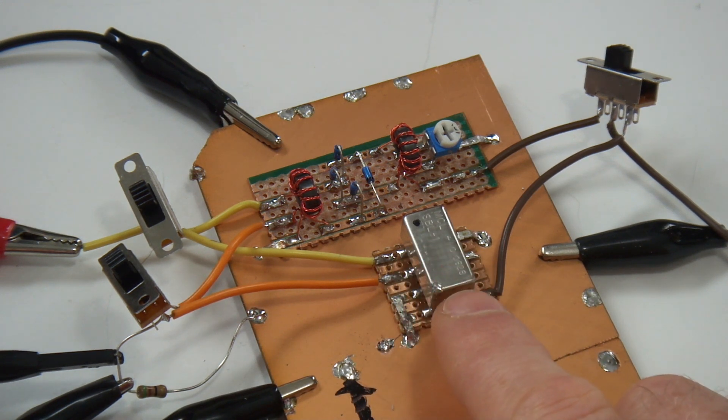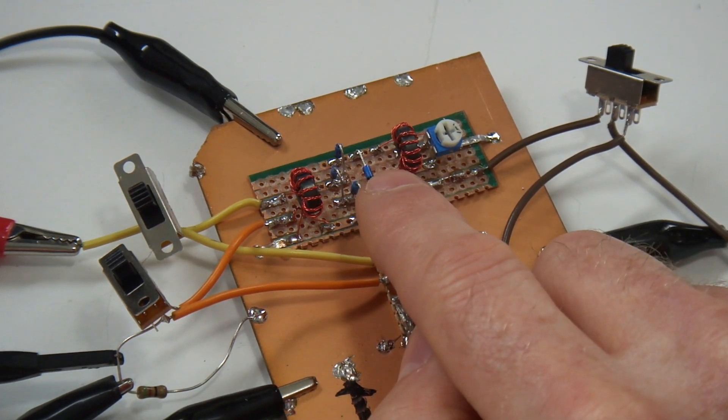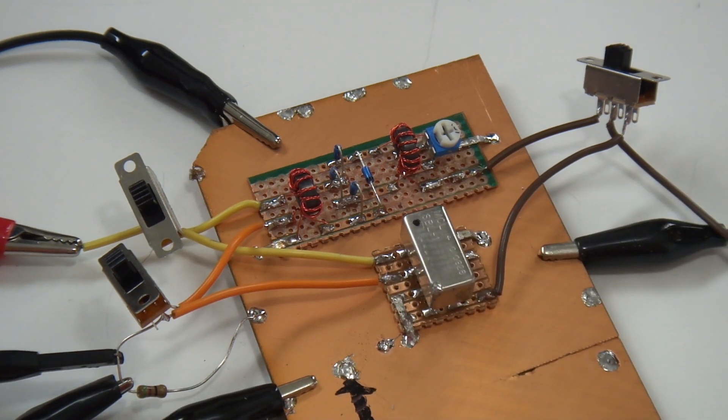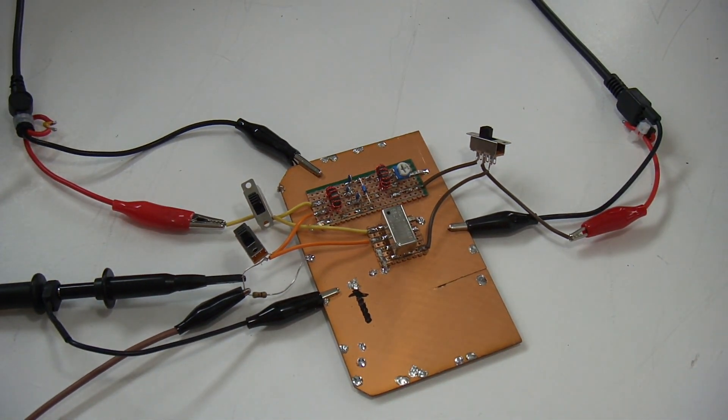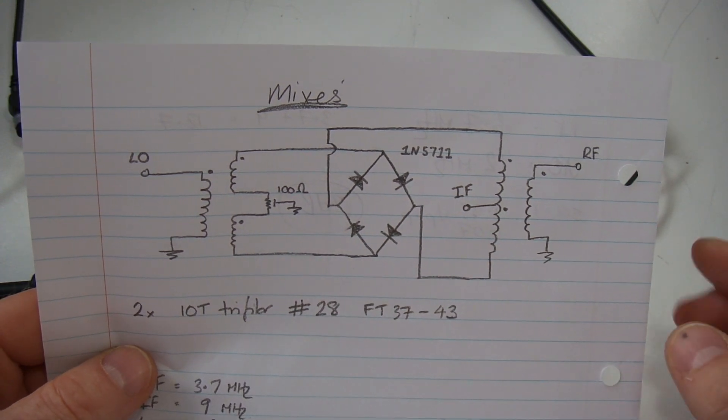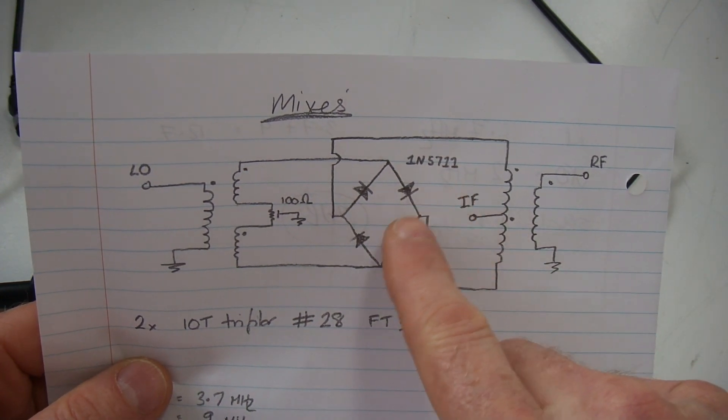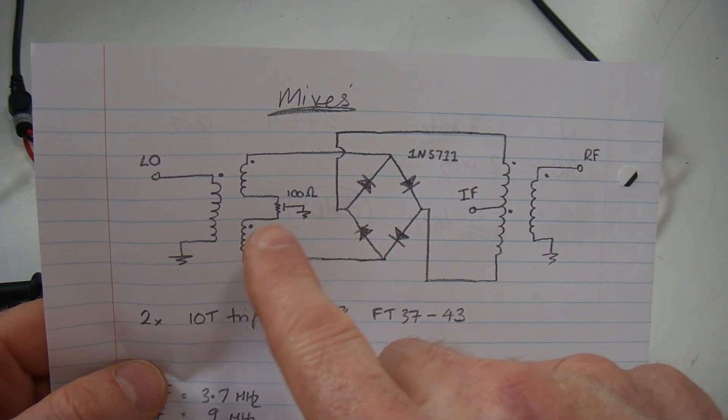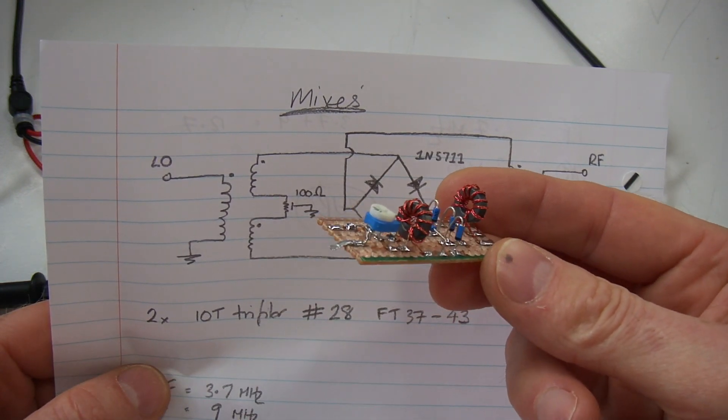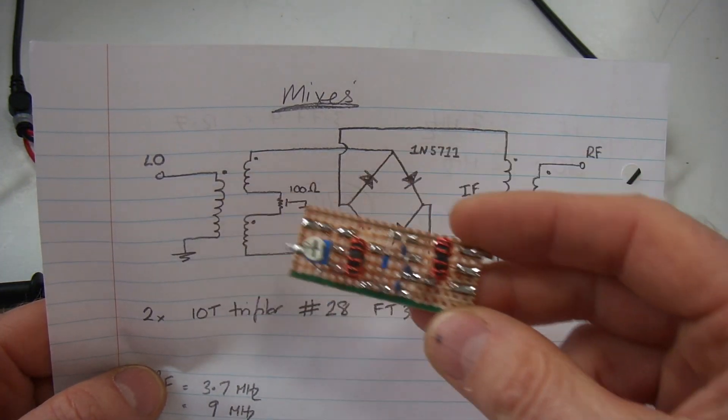You'll recall at the very beginning I said I wasn't going to use some of these exotic parts, for example the SBL1 here, but instead try and homebrew some mixers using more readily available parts. What I've elected to do for this circuit is the standard double balanced mixer setup, a diode ring using Schottky diodes - 1N5711s - and a couple of FT37-43 cores with 10 turns trifilar of number 28 wire configured as you can see here with the dots for the phasing.